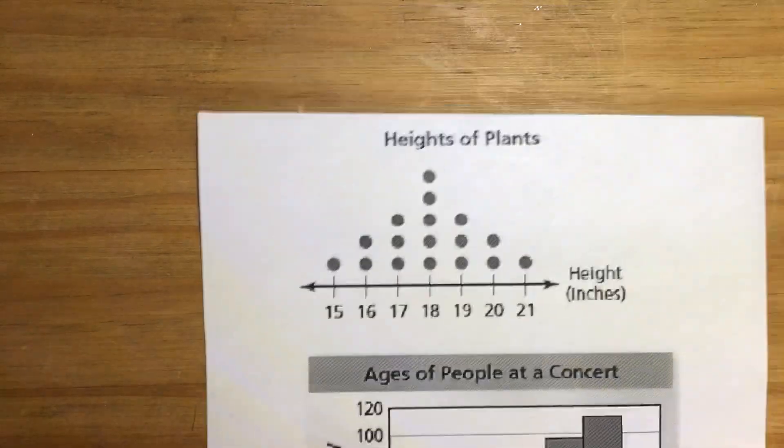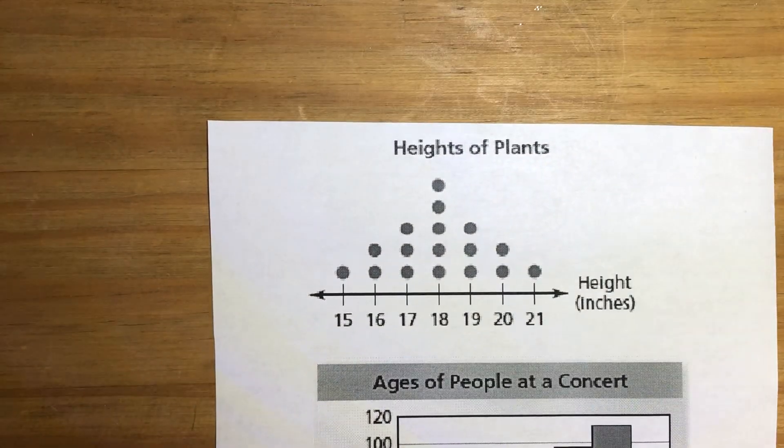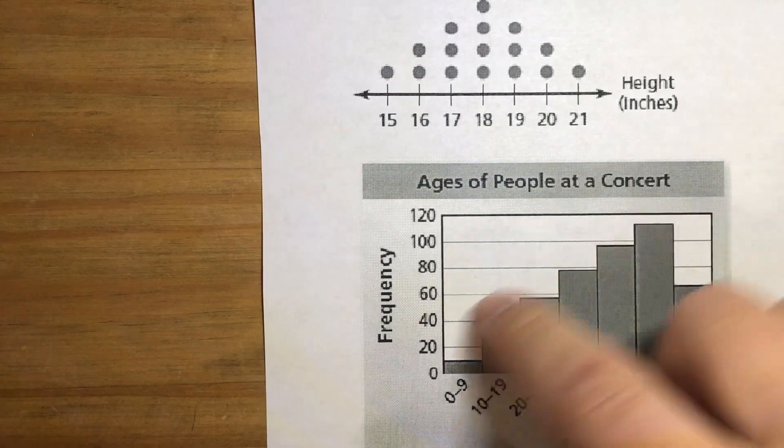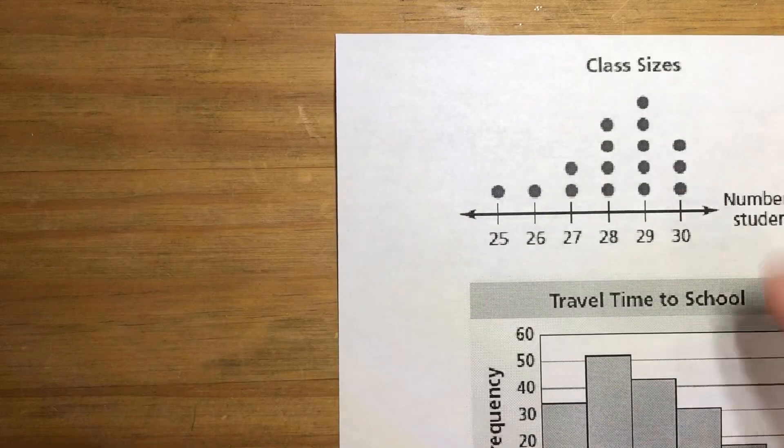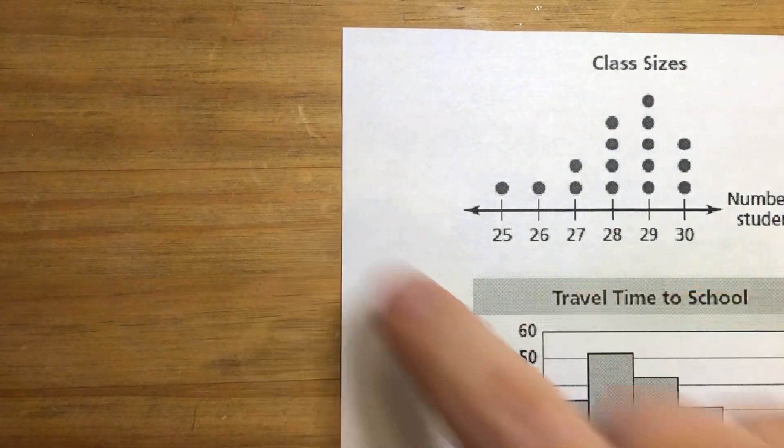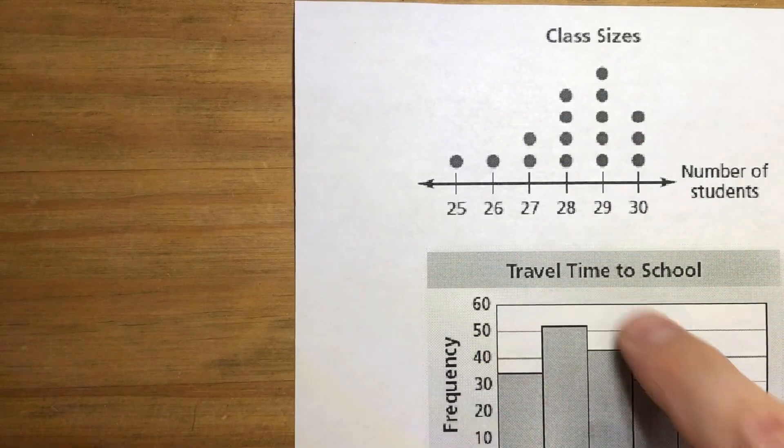This dot plot at the top here, that's symmetric data. And this histogram, that data is skewed left. This dot plot is also skewed left. You can see the majority of the data is on the right, the tail is to the left. And this one is skewed right.